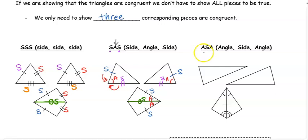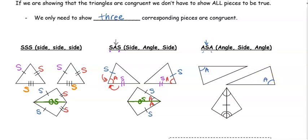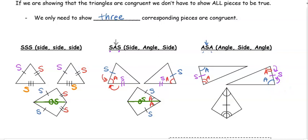The third method is Angle-Side-Angle (ASA). We need two congruent corresponding angles and the included side — the side trapped between the two angles. So we have our first set of congruent angles and our second set of congruent angles. The side must be trapped between them. On connected triangles, the shared side from the reflexive property serves as that included side, giving us angle, side, angle.